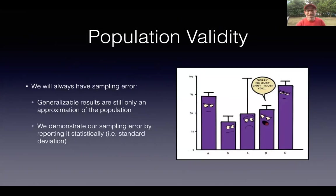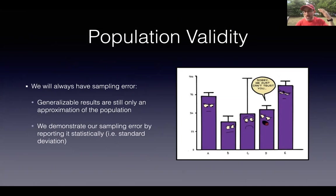We're always going to have sampling error. Even when we do a good job in trying to find a representative sample, there's always error in our studies. And this is why 50% of research in the social sciences isn't replicated. Sometimes what we're trying to measure is so nuanced, so sensitive — things like wellness and depression and grief and achievement and multicultural competence. These are constructs that are really difficult to assess and they're sensitive to change. And so sometimes that's why our findings may not be replicated.